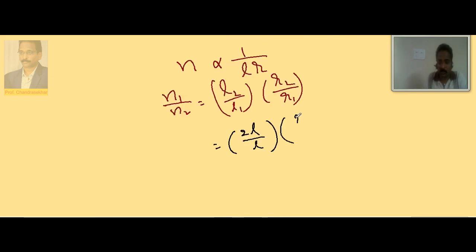So L and L, R and R, 2 and 2 gets cancelled. That means this is equal to 1.